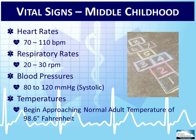If you are keeping track of trends, you will notice that as a child increases in age, the pulse rate drops, the respiratory rate drops slightly, and the systolic blood pressure increases slightly. Body temperature slowly approaches what we consider to be normal in the adult.